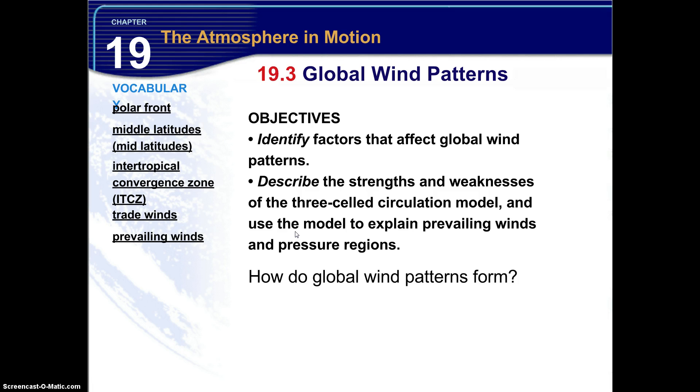The big question here is how do global wind patterns form? Now some key ideas. Both Earth's rotation and the uneven heating of Earth by the sun affect wind patterns. The three-celled circulation model helps to explain prevailing winds and pressure regions. There's our list of vocabulary. And let's begin.